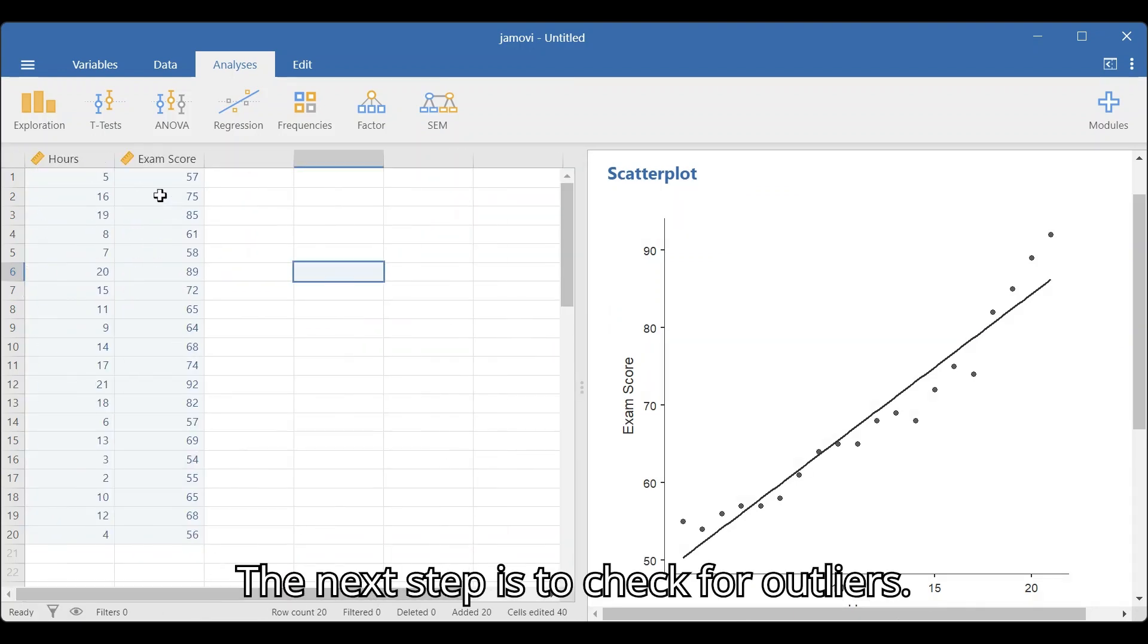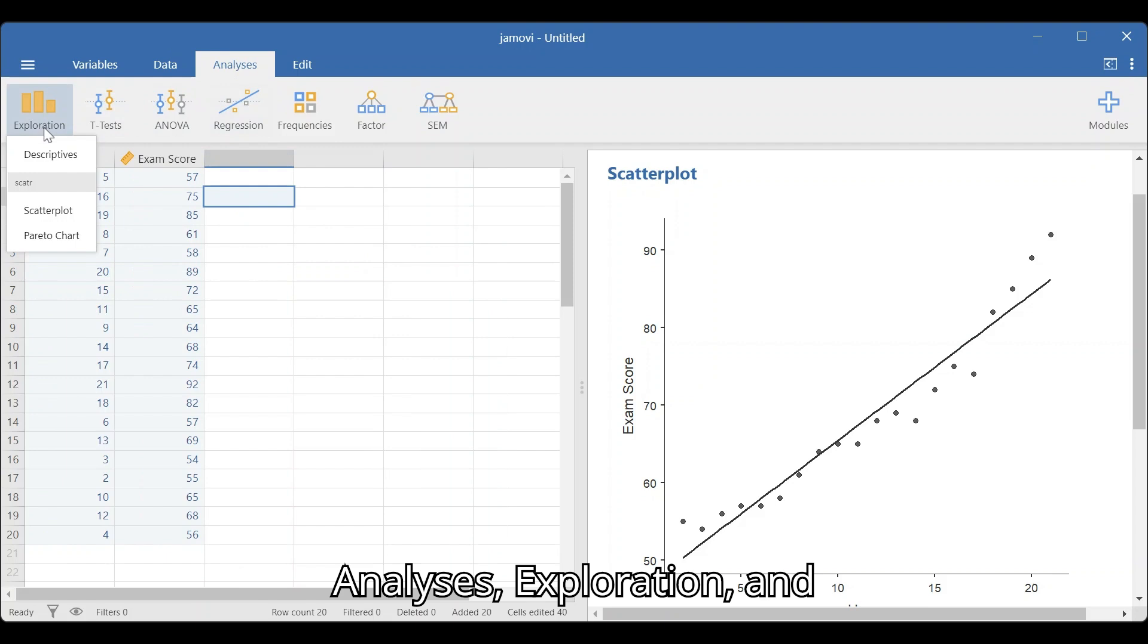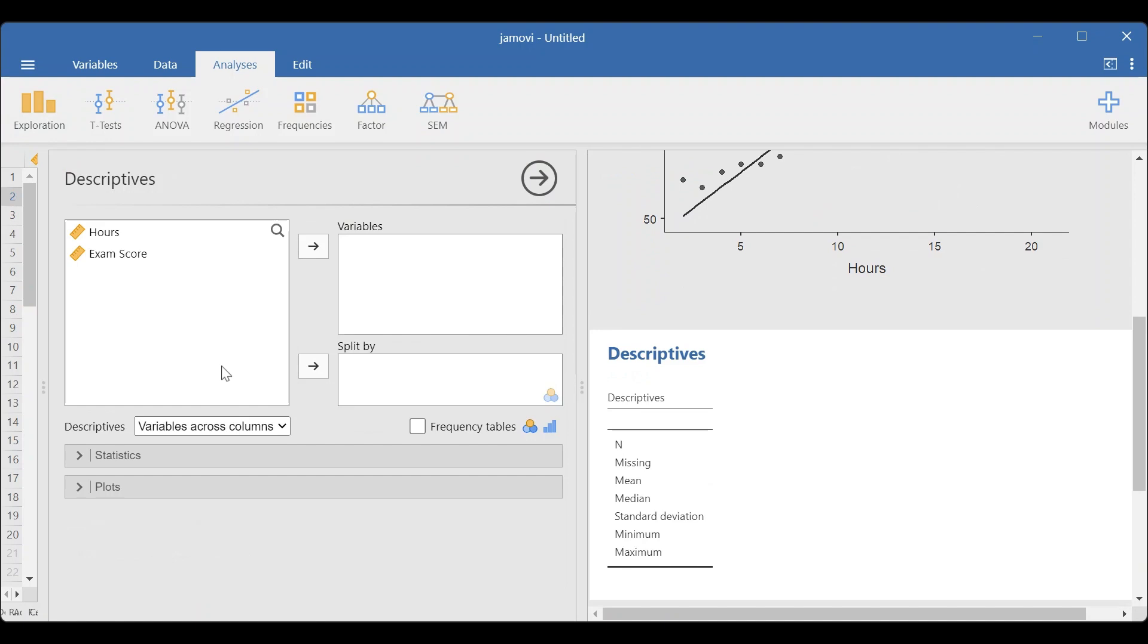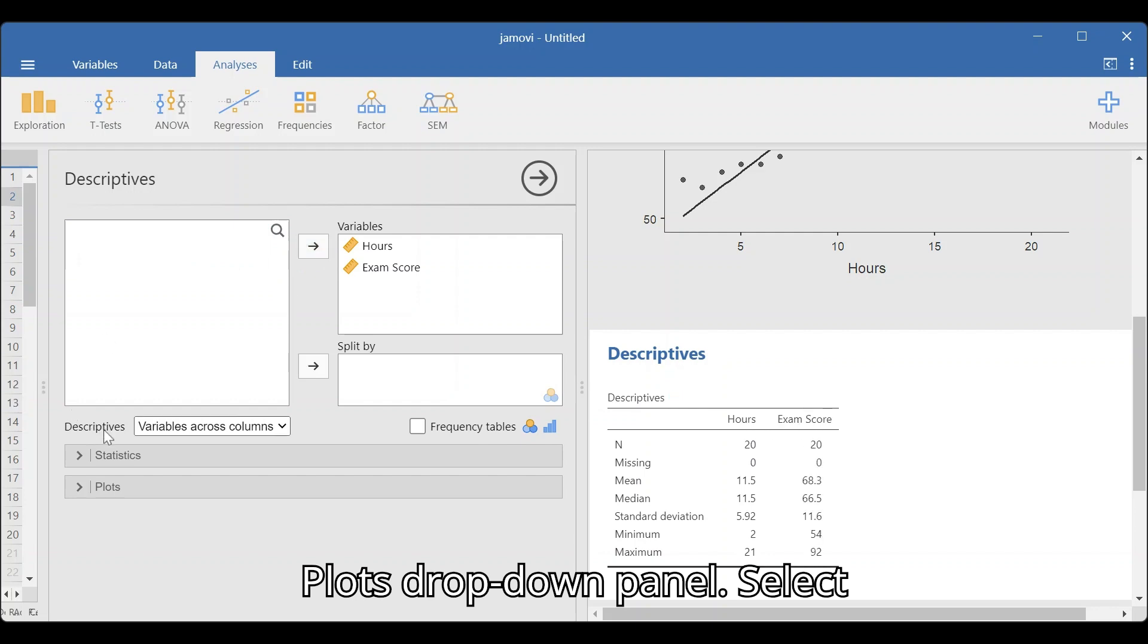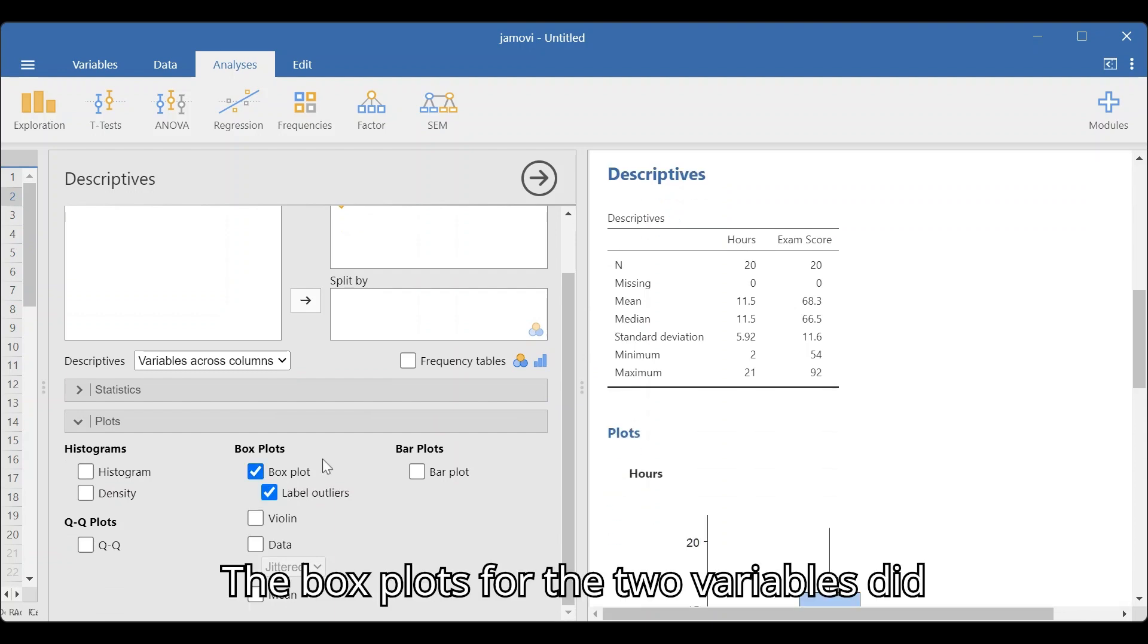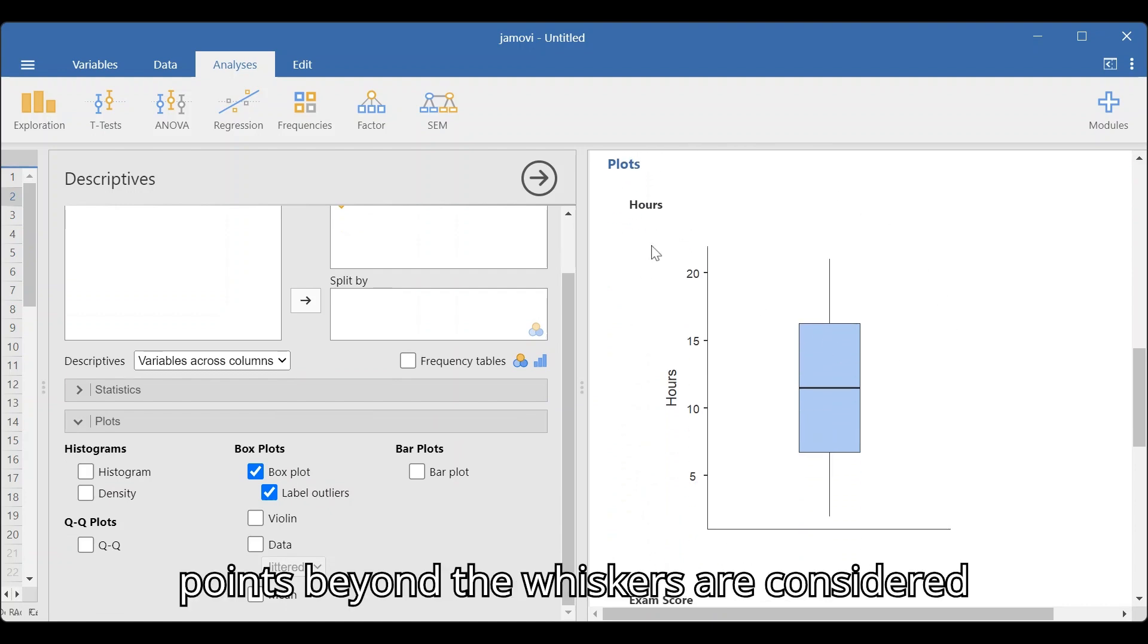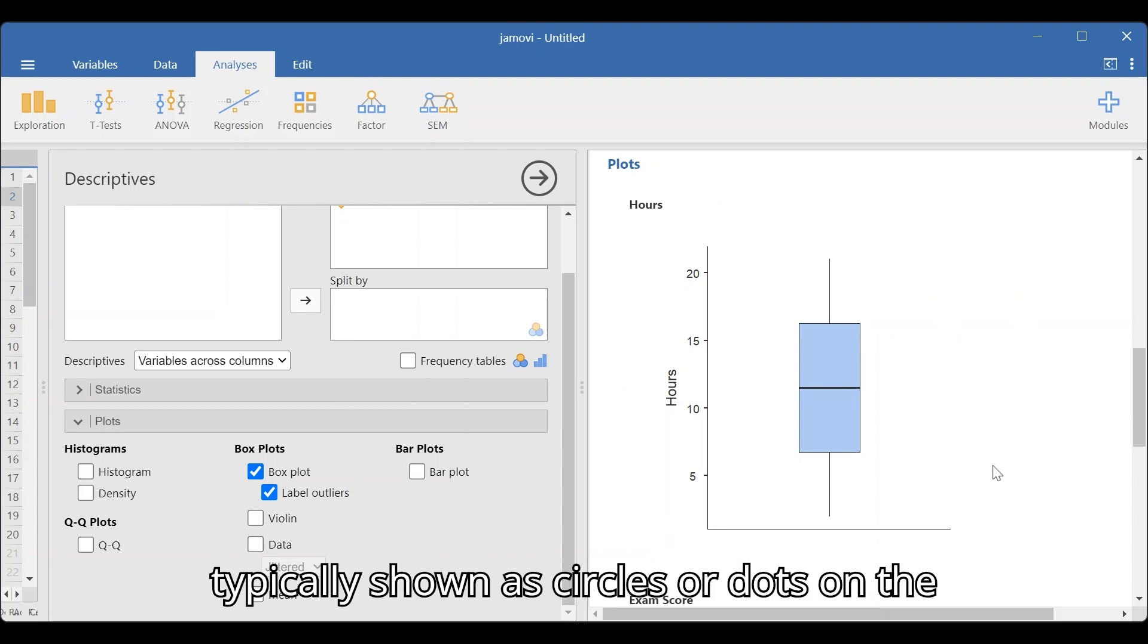The next step is to check for outliers. We will be using a box plot to identify the outliers. Go to Analyses, Exploration, and Descriptives. Place the variables in the box and go to Plots drop-down panel. Select Box Plot. The box plots for the two variables did not show any outliers. Data points beyond the whiskers are considered potential outliers. These are typically shown as circles or dots on the plot.